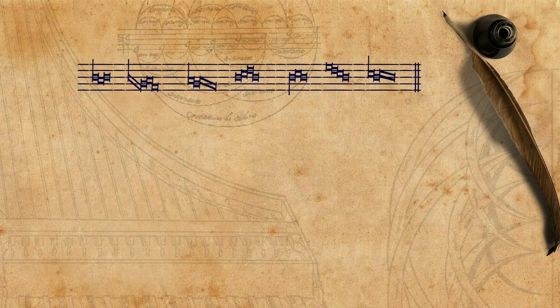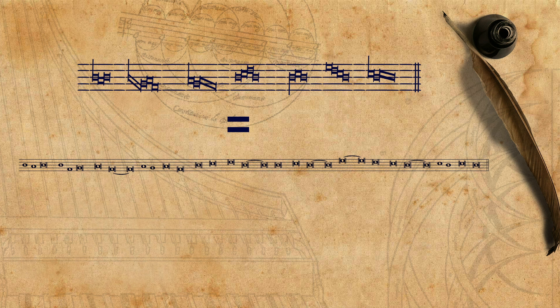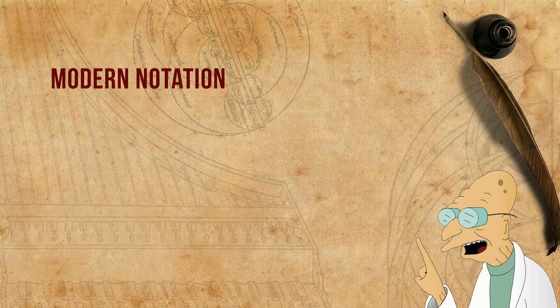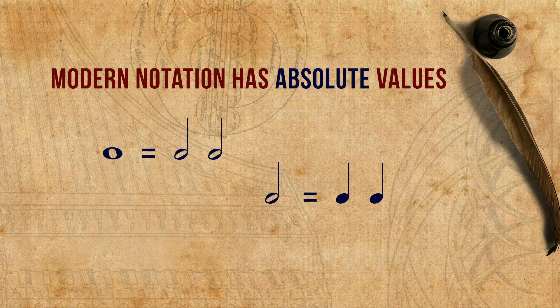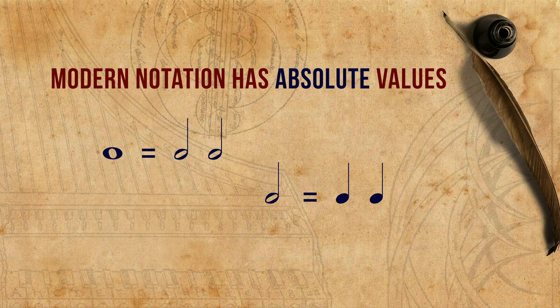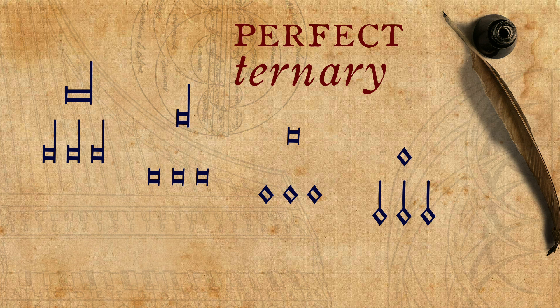At this point, one might think that note values in old times had perhaps different names and different graphical representations, but are essentially equivalent to modern notation. This, however, is very far from the truth. Modern notation — which is in fact not so different from the notation used already in the 17th century — has absolute values. That is, a whole note contains two half notes, and a half note contains two quarter notes. In the old mensural system, however, things were more elaborate. Each note value could be either perfect — ternary, made out of three parts — or imperfect — binary, made out of two parts.